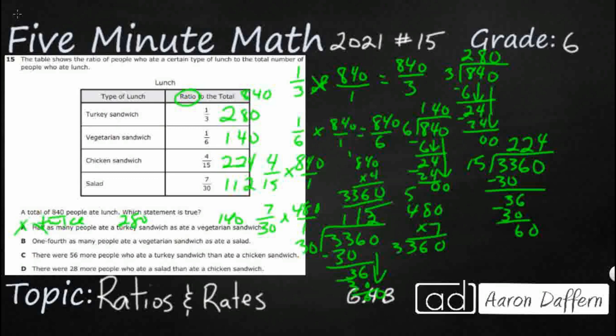'One-fourth as many people ate a vegetarian as ate a salad.' Let's see, vegetarian is 140, salad is 112. I'm not going to do the math, but that's wrong. '56 more people ate turkey than chicken.' 56 people ate turkey than chicken. 280 and 224. That's looking pretty good, yeah.